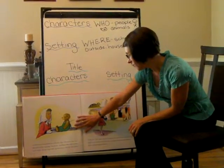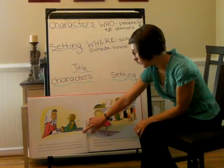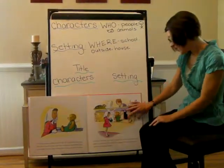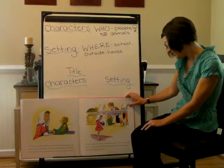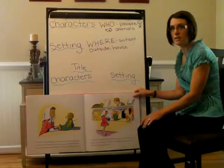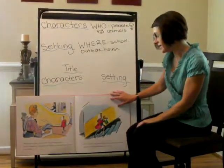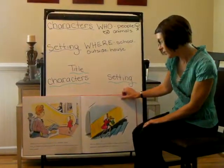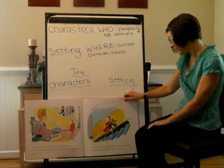Corduroy was just waking up when the first customers came into the store in the morning. And there, looking at him with a wide, warm smile, was the same little girl he'd seen only the day before. 'I'm Lisa,' she said, 'and you're going to be my very own bear. Last night, I counted what I've saved in my piggy bank, and my mother said I could bring you home.' Is that another character? Right, it is. Her name is Lisa. 'Shall I put him in a box for you?' the sales lady asked. 'Oh, no thank you,' Lisa answered. And she carried Corduroy home in her arms. She ran all the way up four flights of stairs into her family's apartment, straight into her own room.